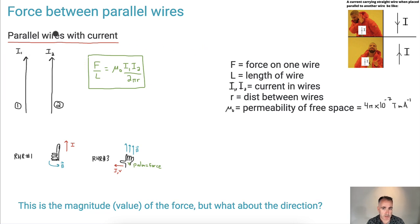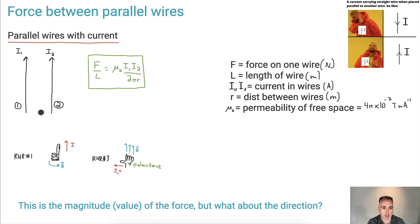So we've got the force on one wire — that's in newtons. We've got the length of the wire in meters. We've got the currents I1 and I2, which must be in amperes. We've got r as the distance between the wires in meters. And then we've got mu zero, called the permeability of free space — it's a constant equal to 4 pi times 10 to the minus 7 tesla meters per ampere, but you can look that up.